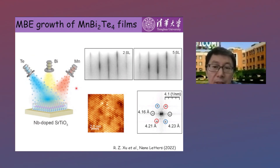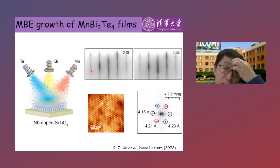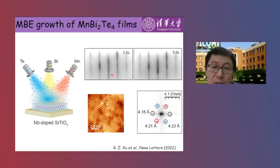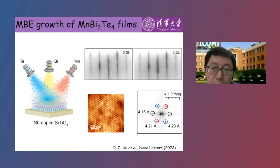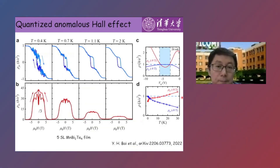The films were grown by MBE and characterized by different techniques. We observed sharp streaks in the RHEED pattern suggesting high sample quality. The in-plane lattice constant is estimated to be 4.3 Angstroms, in good agreement with the bulk sample. Surface topography measured by STM shows a similar surface structure to the bulk, with the hexagonal lattice corresponding to the top telluride atom layer. We also observed considerable defects, mainly manganese atoms occupying bismuth sites — manganese-bismuth antisite defects. The Fourier transform gives an in-plane lattice constant of 4.2 Angstroms, consistent with bulk.